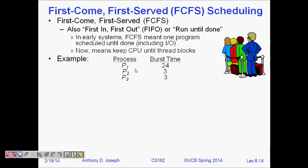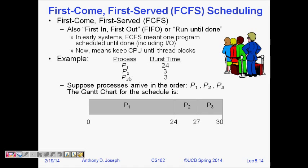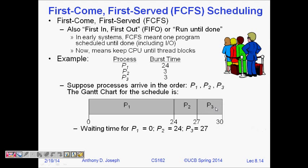Let's look at an example with three processes P1, P2, and P3. Their burst times — how much time they need — are 24 seconds for P1, 3 seconds for P2, and 3 seconds for P3. On the Gantt chart, if we schedule P1 first, then P2, then P3: P1 runs from 0 to 24 seconds, P2 from 24 to 27 seconds, and P3 from 27 to 30 seconds.